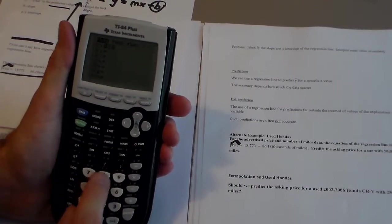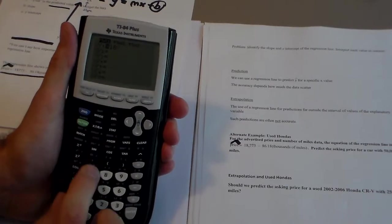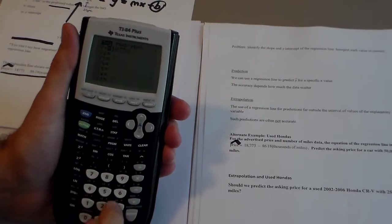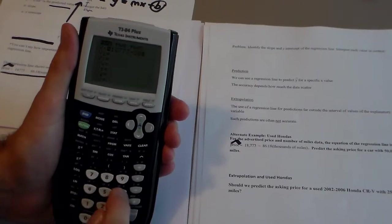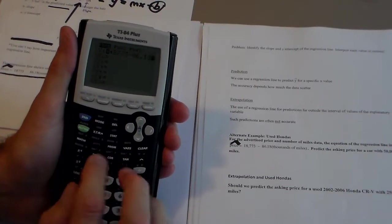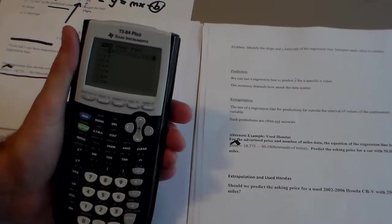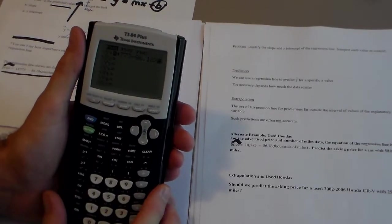and I can write in 18,773 minus 86.18 times the thousands of miles. Where's my X? X, okay, and then just hit enter,